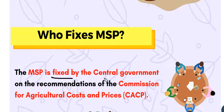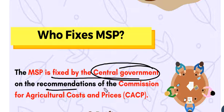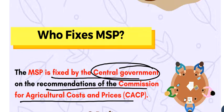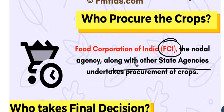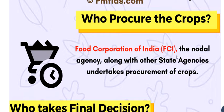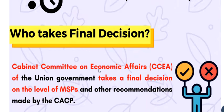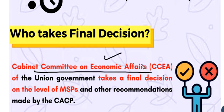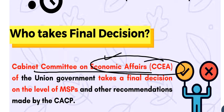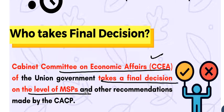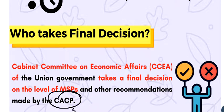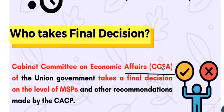MSP is fixed by the Central Government on the recommendation of CACP — the Commission for Agriculture Cost and Prices. FCI along with state agencies procure crops under MSP. The final decision is made by CCEA — the Cabinet Committee on Economic Affairs — which approves the MSP levels recommended by CACP.